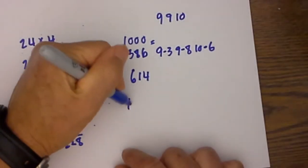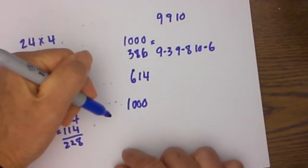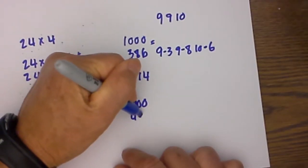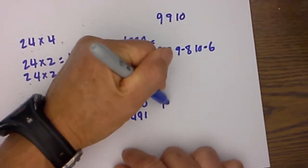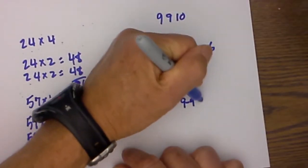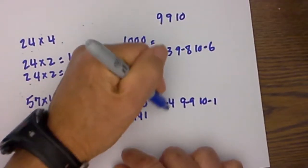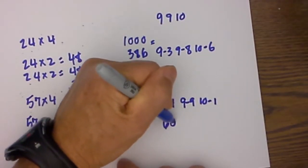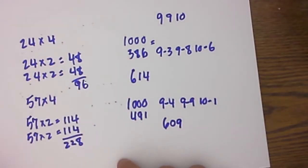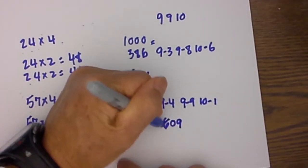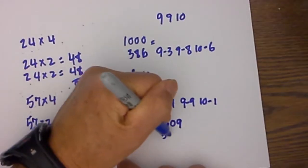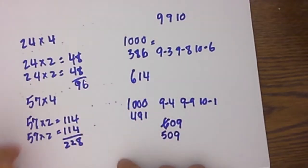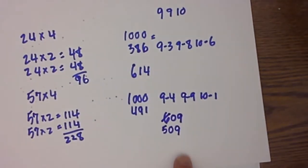Let me work one more example of those just so you can see how easy it is. Let's go with 491. 9 minus 4, 9 minus 9, 10 minus 1. That would be 5, 0, 9. You have to watch yourself when you are subtracting.